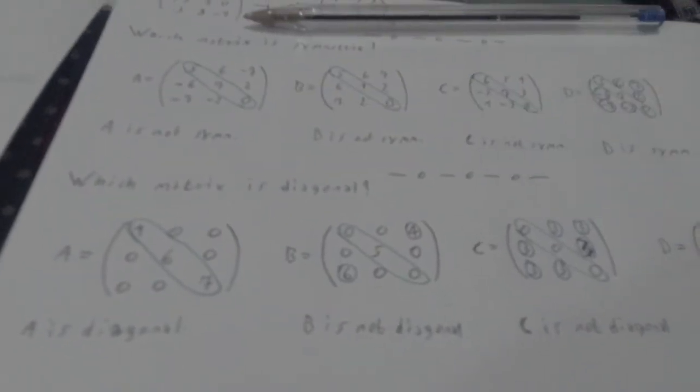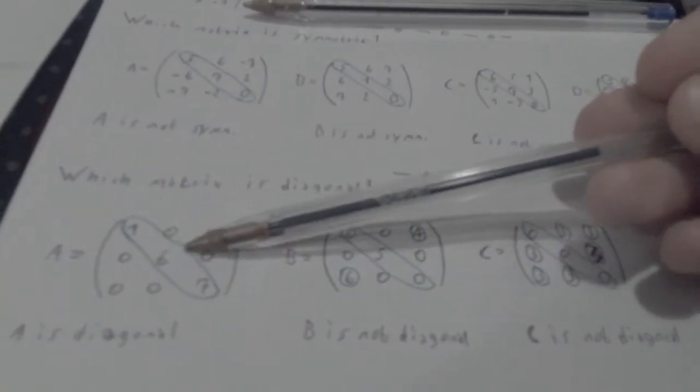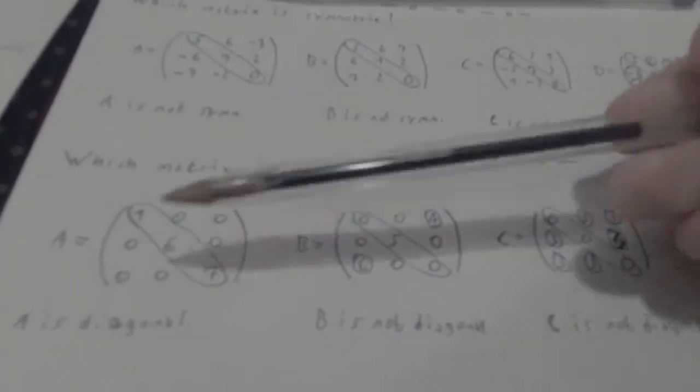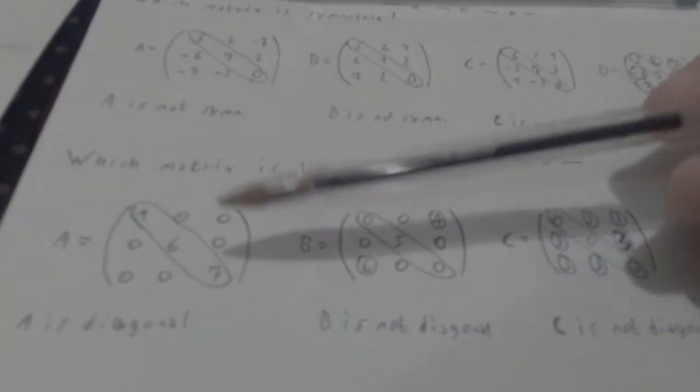So this is what we wanted. We wanted the values in the main diagonal to be something, anything, but everywhere else we wanted 0, so null values.